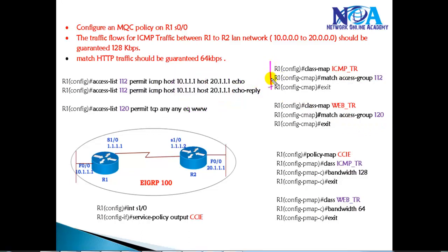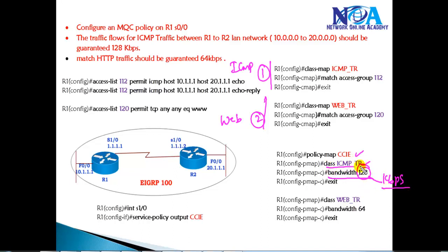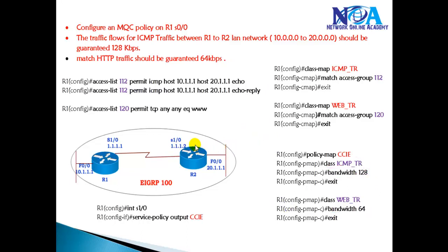We create two different class maps: one matches ICMP traffic and the second matches web traffic. Then inside the policy map we call those class maps. For ICMP traffic we use the bandwidth command in Kbps — here 128 Kbps is guaranteed during congestion. Similarly, web traffic is called in the policy map and guaranteed 64 Kbps during congestion. If there is no congestion, they can still use excess bandwidth.